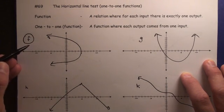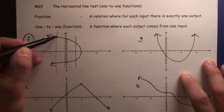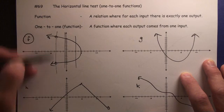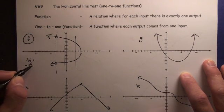This is actually not even a function because it doesn't pass the vertical line test. You see, for this input you're getting two different outputs. So this is not even a function.